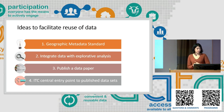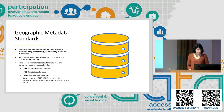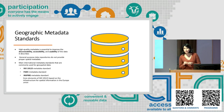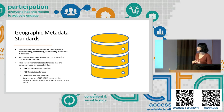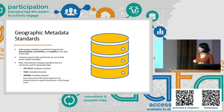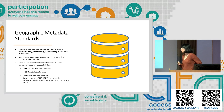And finally, we use the ITC website as a central entry point to advertise published datasets. The first idea is that one of the most important aspects of the FAIR principle is to provide high-quality metadata, because it improves the discovery, accessibility, and usability of the data. Unfortunately, general-purpose data repositories don't provide proper spatial metadata.